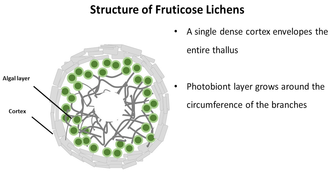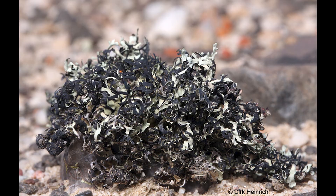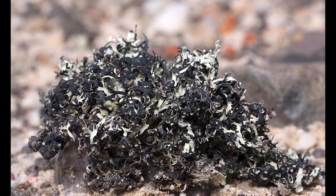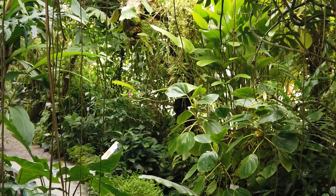A continuous algal layer goes around the circumference of the branches of the lichen. The next layer is a medulla and either a hollow center or a dense center cord. Fruticose lichens are found in many different types of climates, from deserts to rainforests.